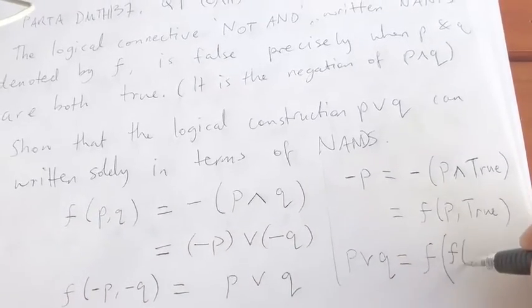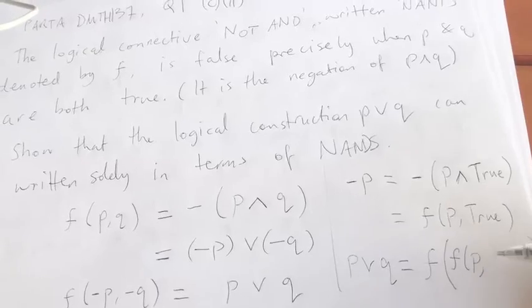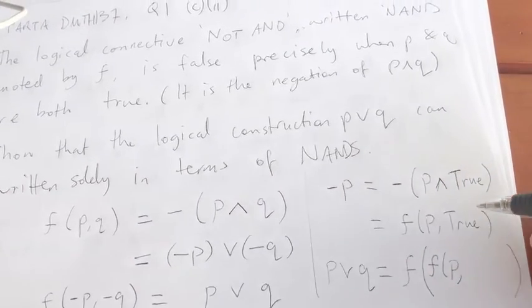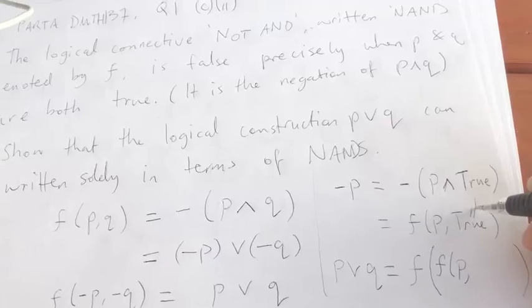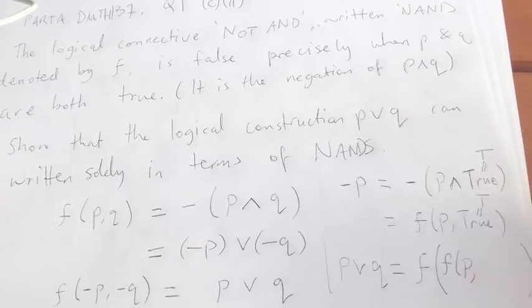So F of P. Okay, I am going to write the letter T. I'm going to run out of space. So this is T, T.